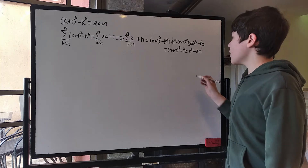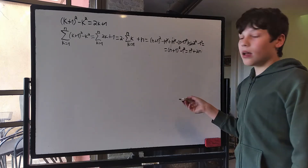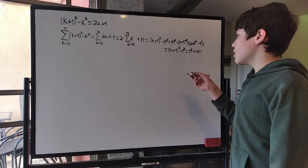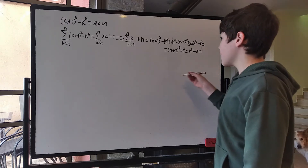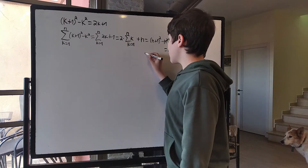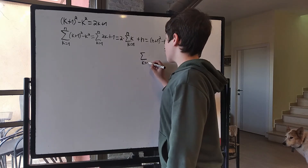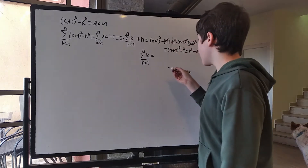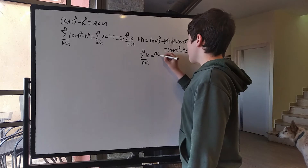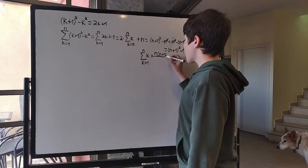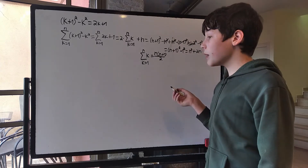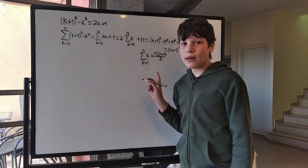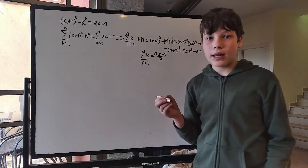Now we have this simple equation. All we need to do is subtract n and divide by 2 to get that the sum from k=1 to n of k equals n times (n+1) over 2. You might have already seen that formula, and that's one way to prove it. Now that we have this trick in mind, let's jump into the next sum.